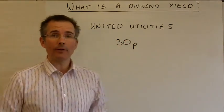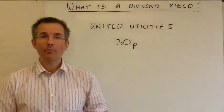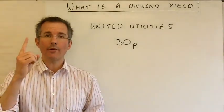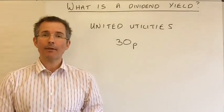And the directors have confirmed that for the latest 12-month period, they'll be paying a dividend of 30p. Now, clearly, that's not the total dividend. That's the dividend per share. So if I own one share in United Utilities, I can expect 30p.